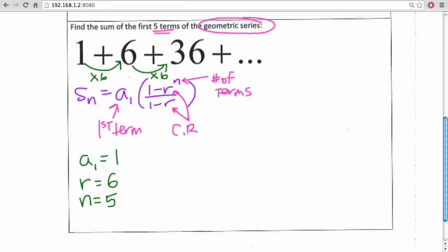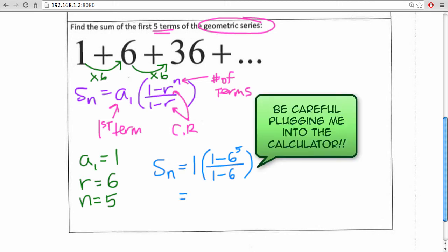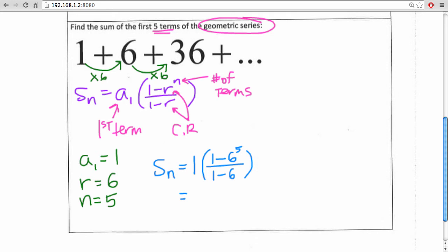So using our formula, S sub n equals your first term times the quantity 1 minus r to the n, in this case r is 6, n is 5, divided by 1 minus r. You want to be very careful when you're plugging this into the calculator, but when you do plug it into the calculator, you should get 1,555.